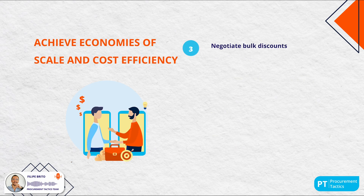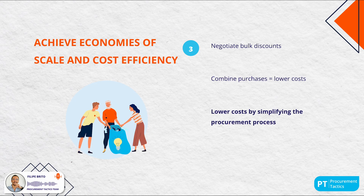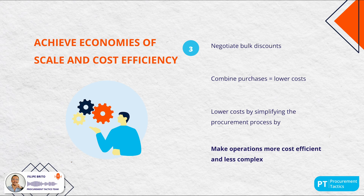Another benefit is achieving economies of scale and cost efficiency. By consolidating purchases within specific categories, procurement teams can negotiate bulk discounts and reduce unit costs, lowering overall procurement spend and simplifying the purchasing process. Category strategies are ideal for making operations more cost-efficient, less complex and helping organizations stay compliant with procurement policies.